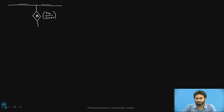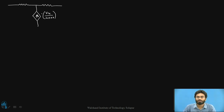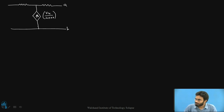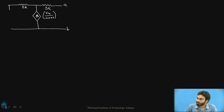Whenever we have dependent sources we need to be very careful and identify the quantity on which the dependent source depends. Since this voltage-dependent current source is dependent on Vx, we need to first identify where Vx is in the given circuit. Now let me complete the rest of the circuit - here we have the A and B points. The resistor values are 2k and 3k, and we have an independent source of four volts.